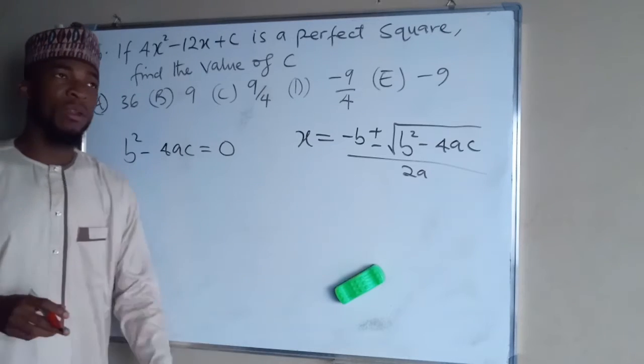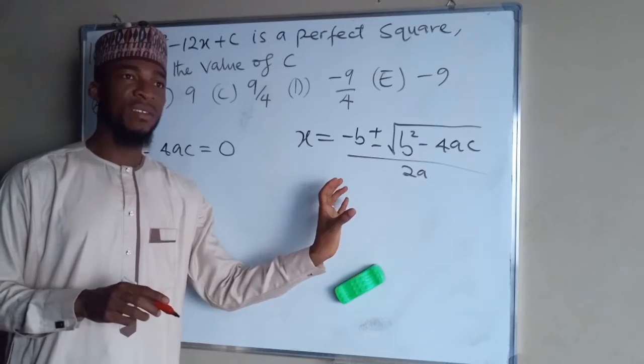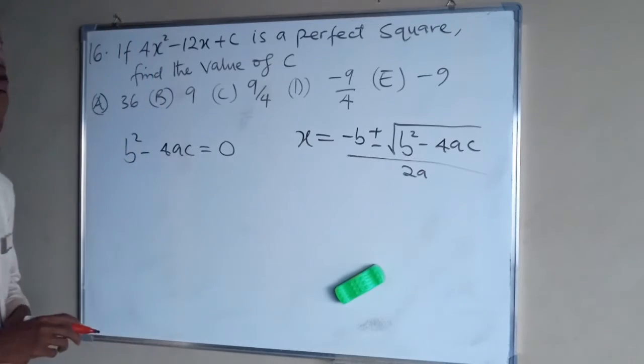But if the value of B squared minus 4AC is less than zero, that quadratic equation has imaginary roots. It has no solution.